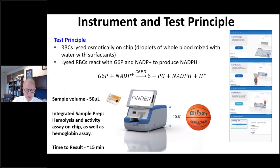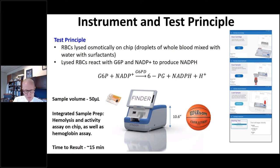The next couple of slides give an idea of the device and the process. This is a representation of the device — it's about the size of a basketball. The process is that a whole blood sample, which we're estimating to be 50 microliters, is loaded onto a single chip. G6PD and hemoglobin levels are measured on the chip within the device, and then a report is given out, with an estimated time to result of approximately 15 minutes.